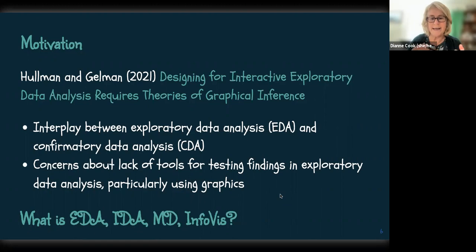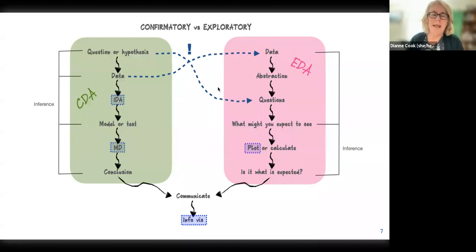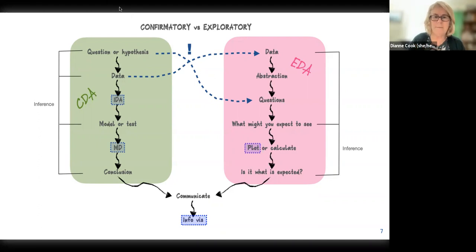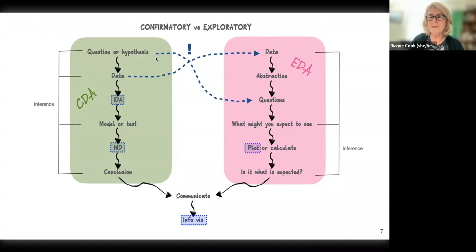There are also a lot of different terms floating around: EDA, IDA, MD, and InfoVis — all interwoven. EDA is exploratory data analysis, IDA is initial data analysis, MD is model diagnostics, and InfoVis is information visualization. Where do these fit in the data analysis pipeline? That's one of the things we focused on in our commentary. I've tended to think of confirmatory and exploratory data analysis as distinct, but they bleed together. The difference often comes at the start of an analysis.